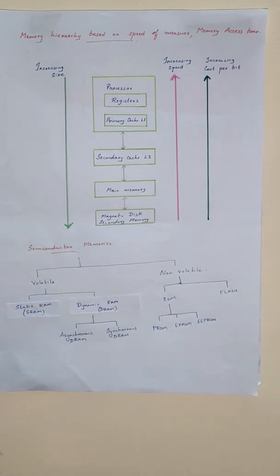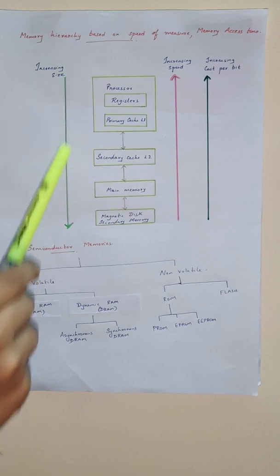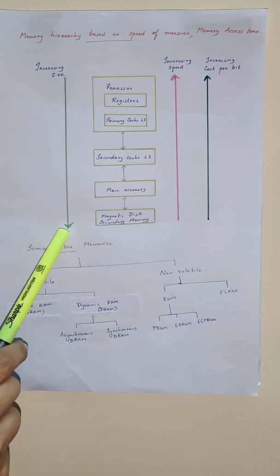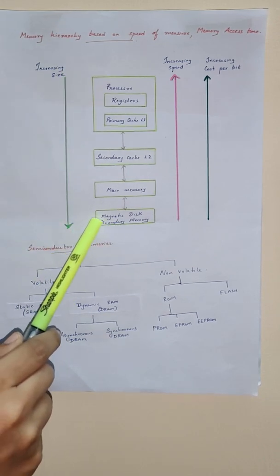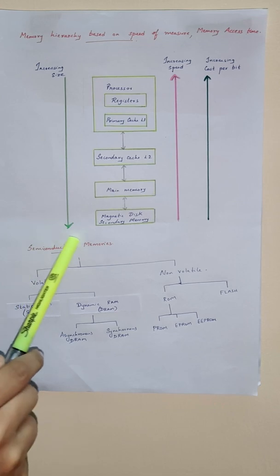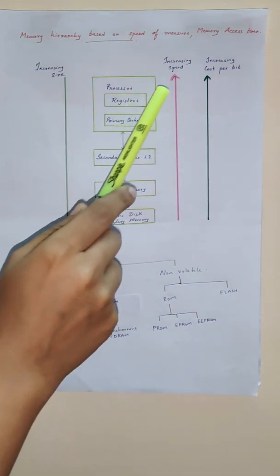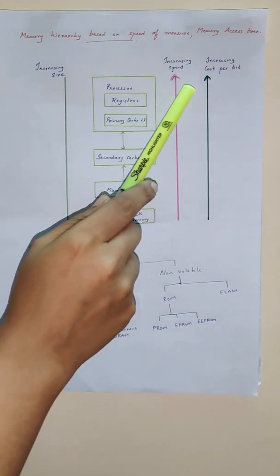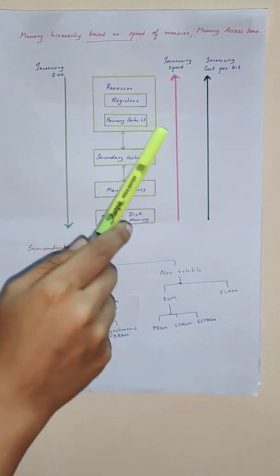In this hierarchy, speed will decrease and size will increase from top to bottom. So the secondary memory will have the highest space and the processor unit will have the highest speed.